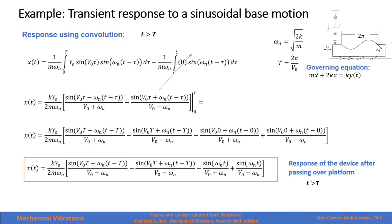This demonstrates that even though the forcing function is zero after the sinusoidal wave, we still have a nonzero response due to the effect of that prior perturbation — just like a car going over a bump: after the bump is gone, the system still responds. Remember that this is only the particular solution; we must always add the homogeneous solution, which depends on the initial conditions.